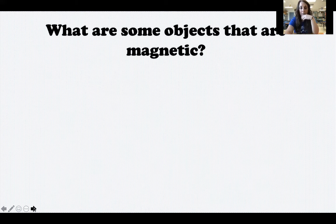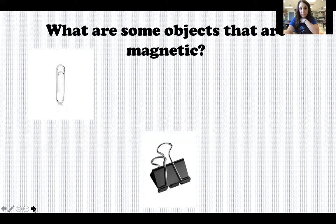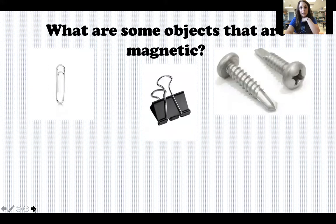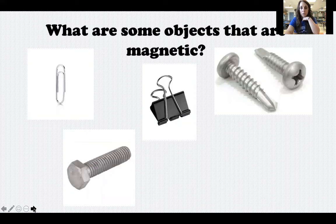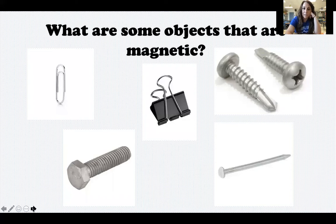So what are some objects that are magnetic? A paper clip, a binder clip, screws, a bolt, and a nail — all of these things are magnetic. They are made out of certain types of metals that are attracted to a magnet, so that means they're magnetic, and we'll see that in just a minute.